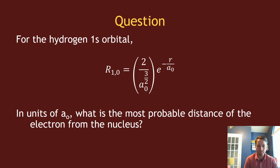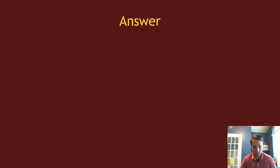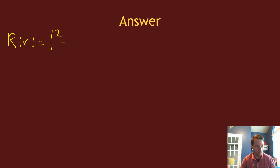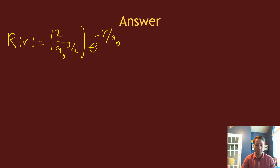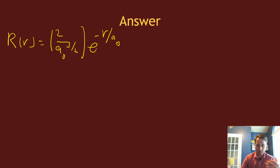To answer this, the radial function is equal to (2/a₀)^(3/2) times e to the minus r over a₀. In order to find the most probable distance, we need to look at what the probability distribution function is for an electron in an orbital. The probability distribution function is related to ψ*ψ.